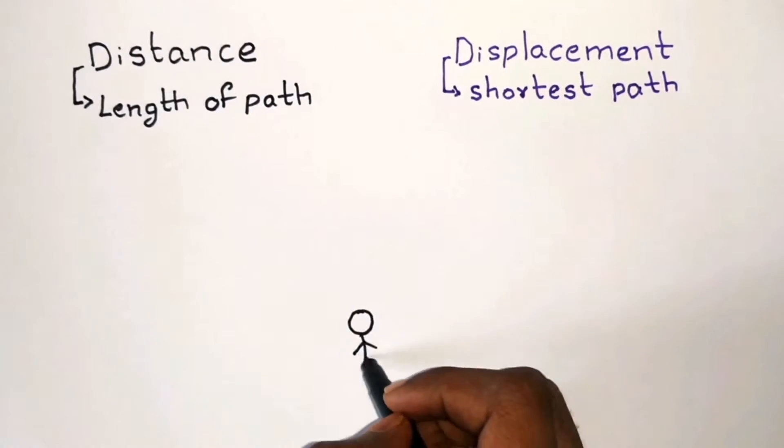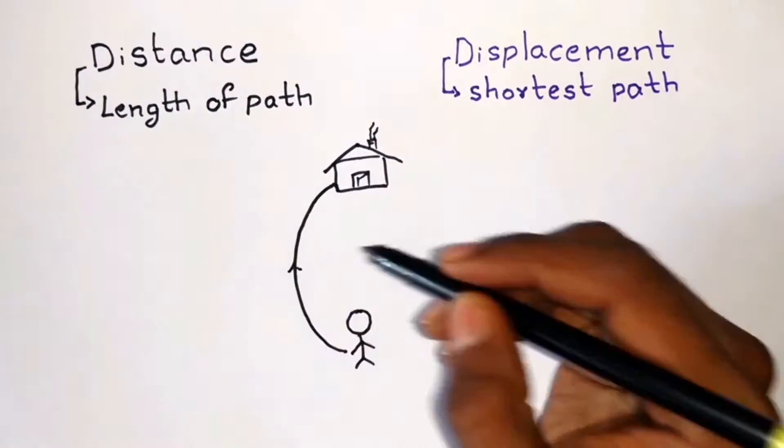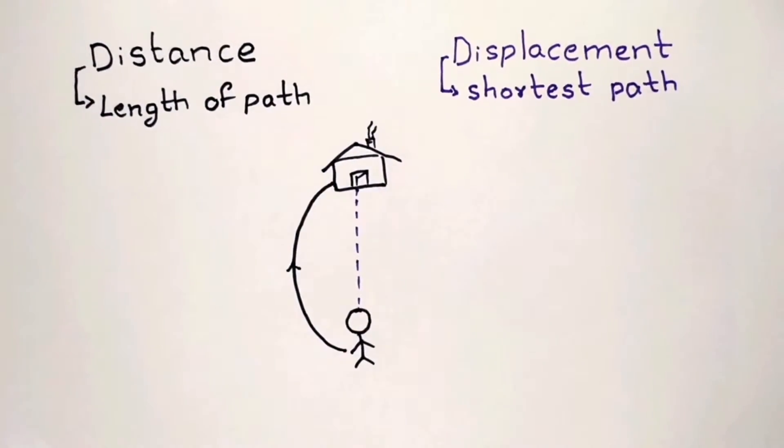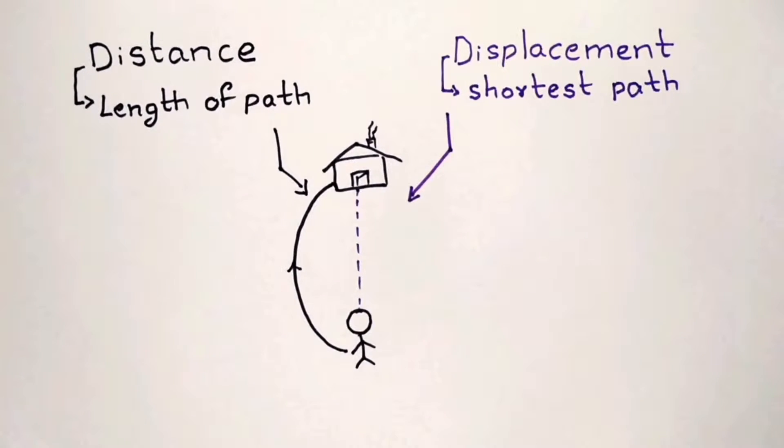To explain this, consider an example of a boy who has to reach his home. Let's say he has taken a curved path. Then the distance is given by the total length along the curved path, and the displacement is a line joining the initial and final positions.